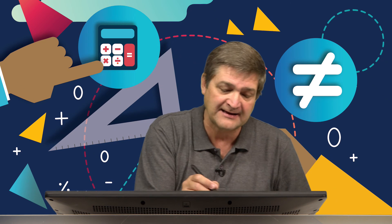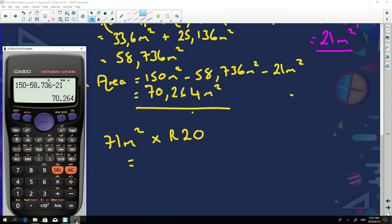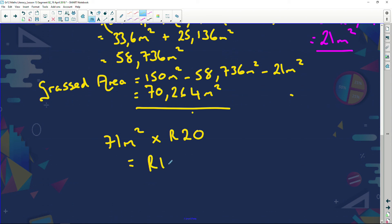So how much grass does Mrs. Brown actually need? Well, 70 will not be enough. There's going to be a patch that's not going to be grassed. She's going to have to buy 71 meters squared of grass. She'll have a little bit left over, but that's okay. And then we're going to multiply that by 20 rand to see how much it's all going to cost her. So looking at that, we say 71 multiplied by 20 rand equals, and it comes to a total of 1,420 rand.